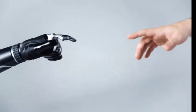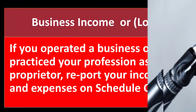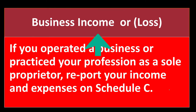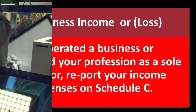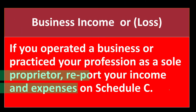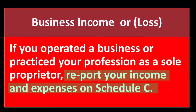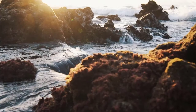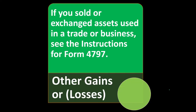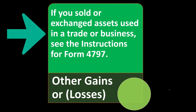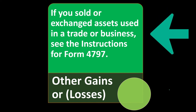We'll talk about that more in future presentations. If you operate a business or practice your profession as a sole proprietor, you typically report income and expenses on Schedule C. That then flows through to Schedule 1 and then to the first page of the 1040.